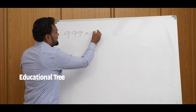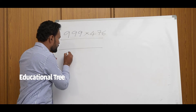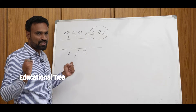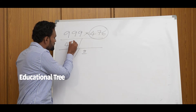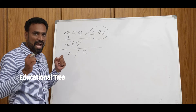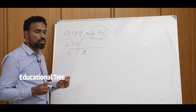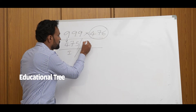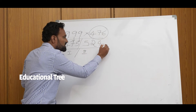Now let's try another example: 999 into 476. We have already seen two examples. So you should be able to write the answer directly. For the second part: 9 minus 4, 9 minus 7 is 2, and 9 minus 5 is 4. This is the final answer. You can check this in a calculator also.